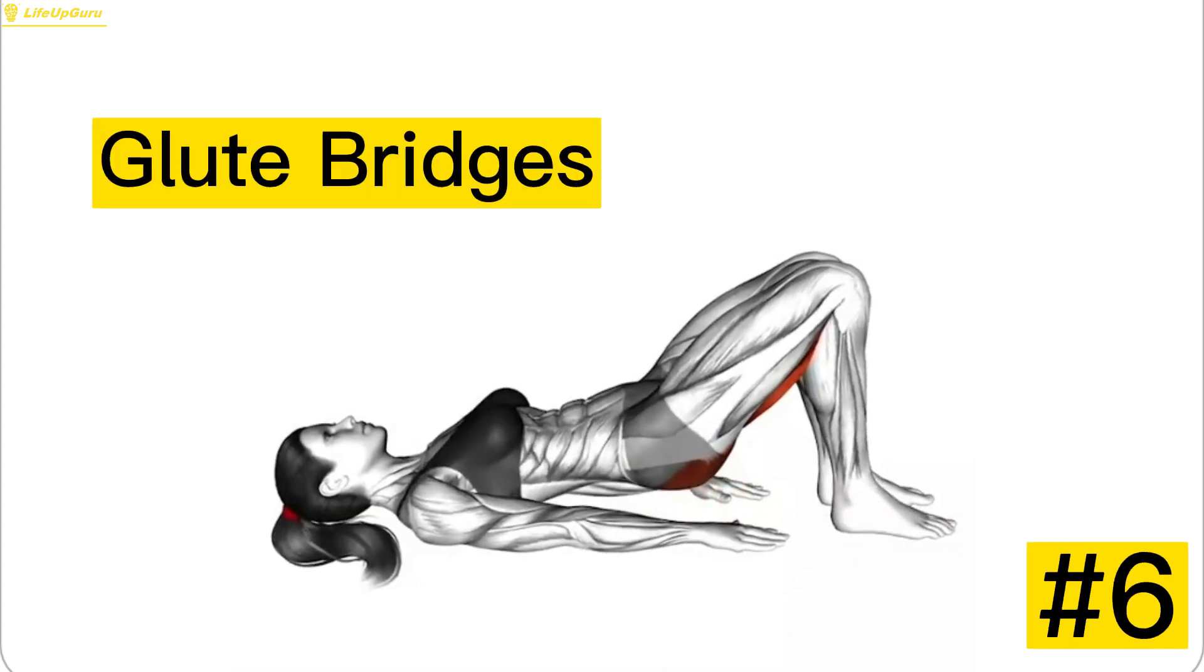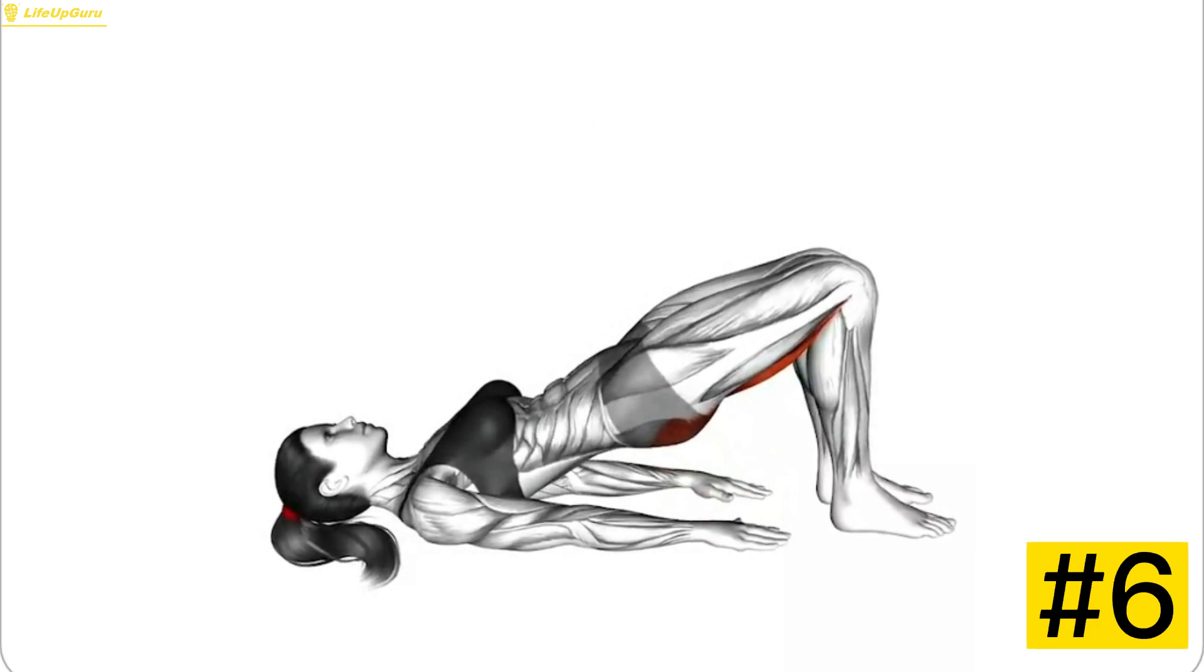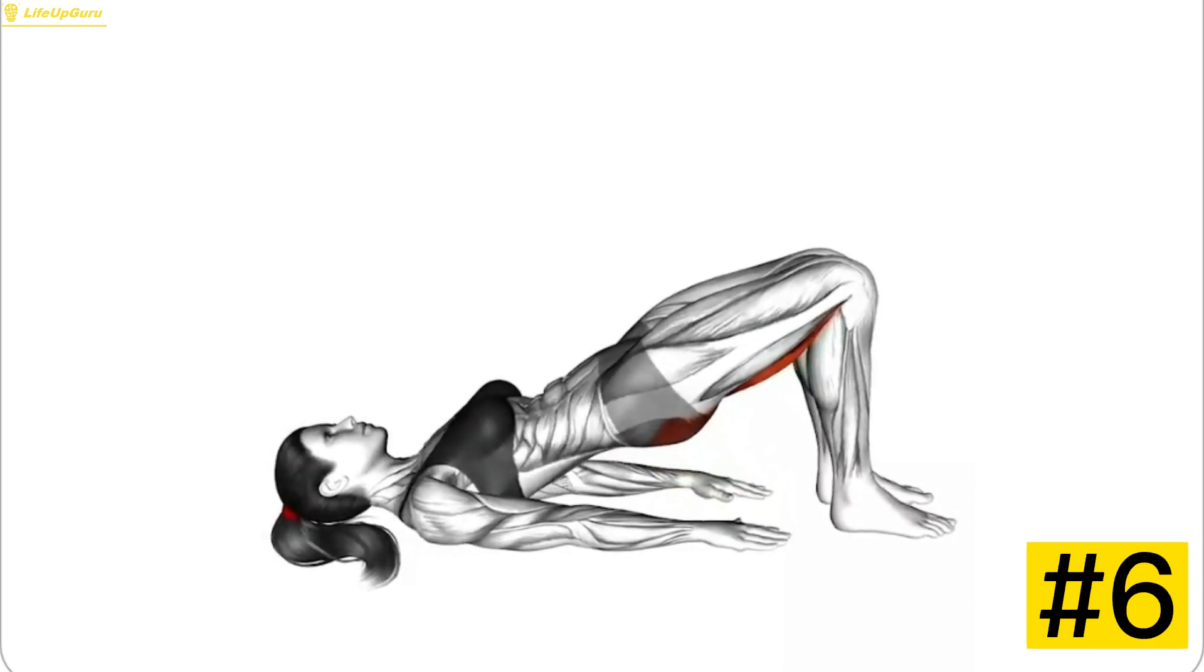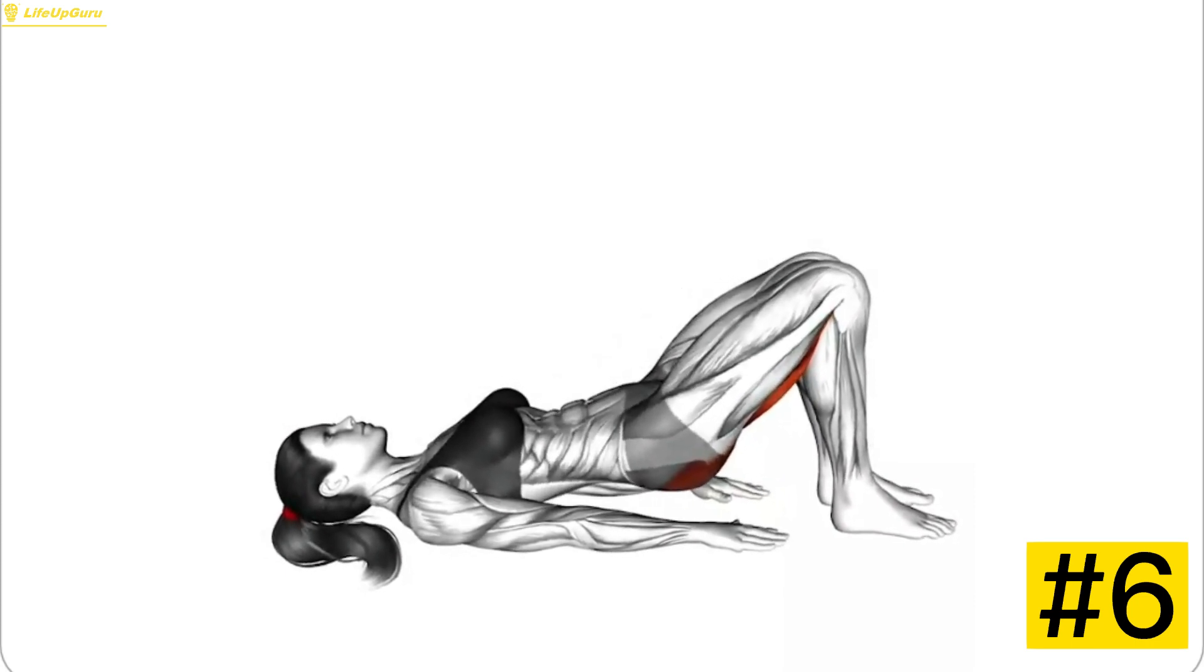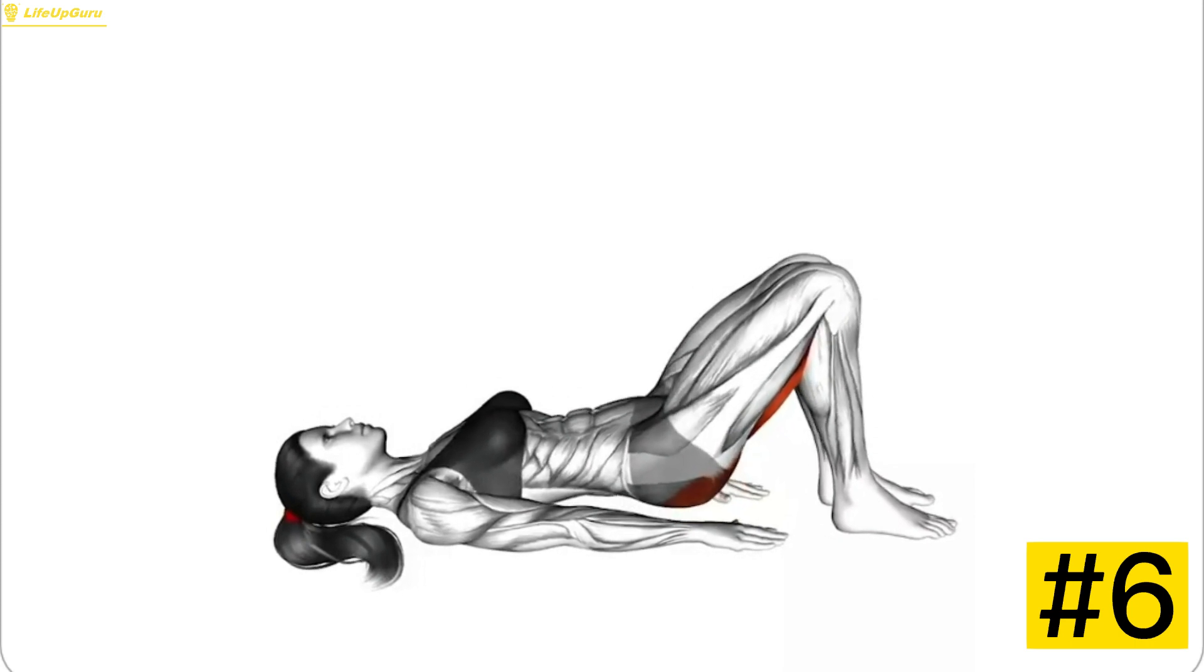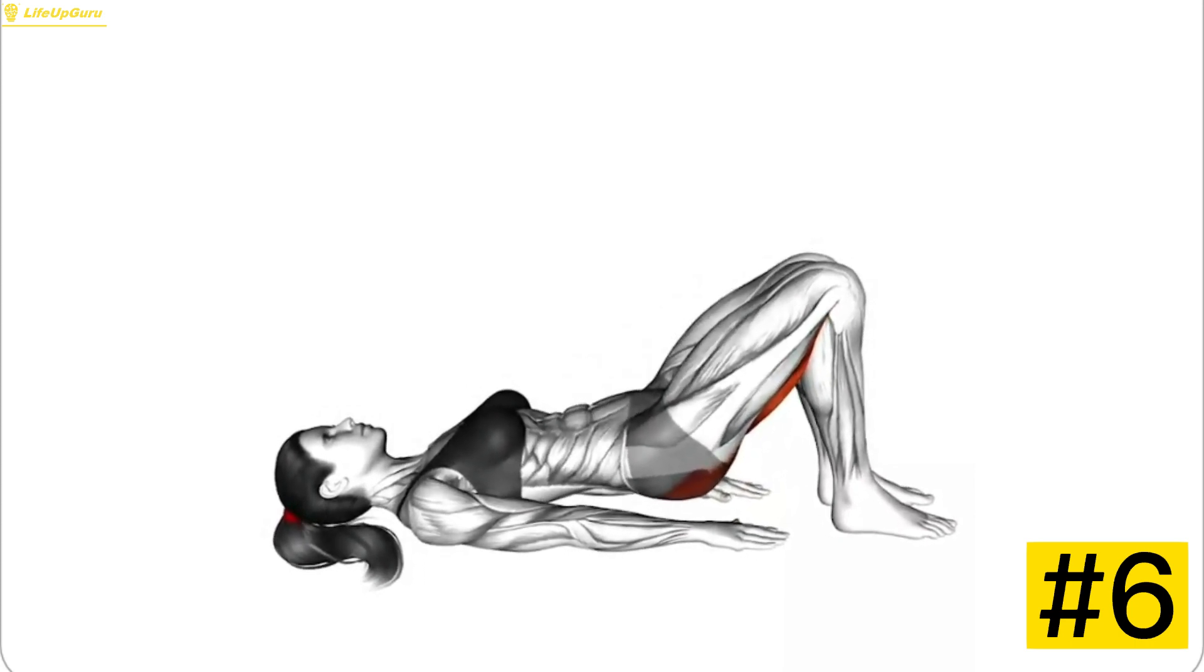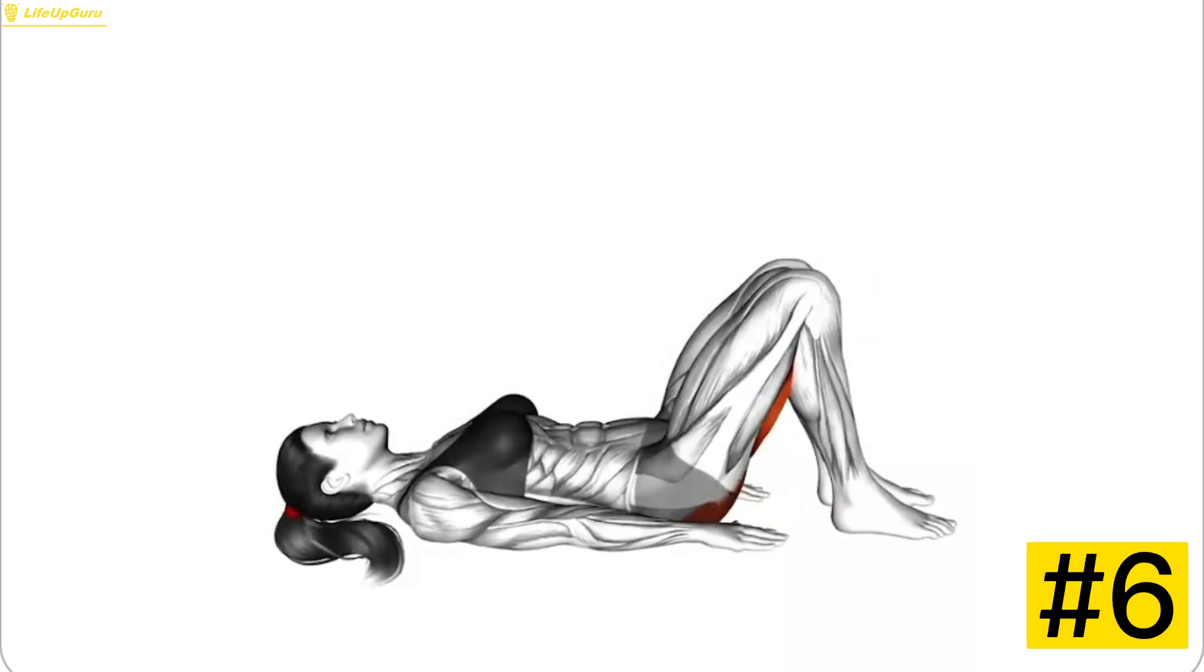Exercise 6, Glute Bridges. Want to strengthen your glutes and hamstrings? Glute bridges are the way to go. Lie flat on your back with your knees bent and feet flat on the ground. Push through your heels to lift your hips off the floor, squeezing your glutes at the top. Slowly lower back down and repeat.